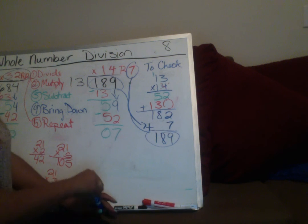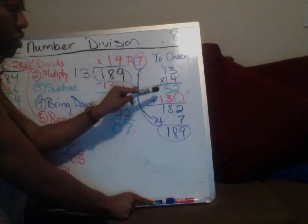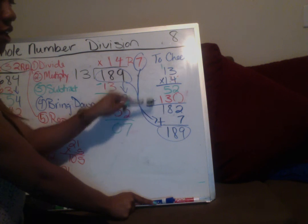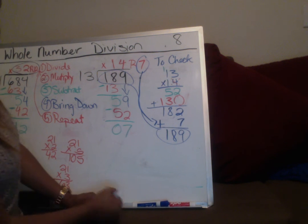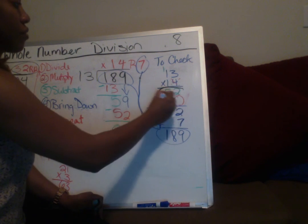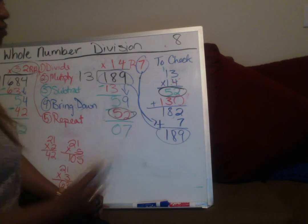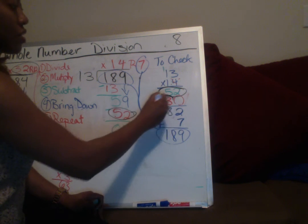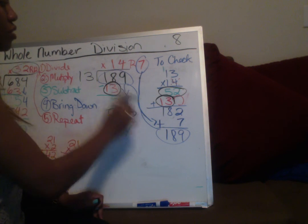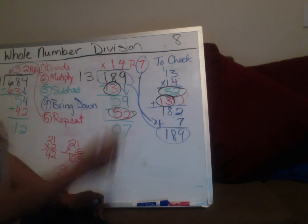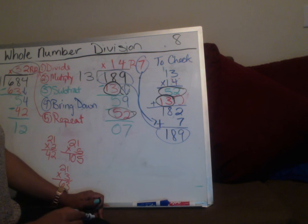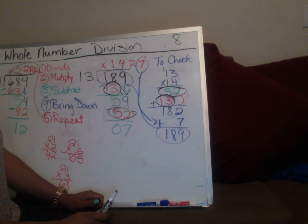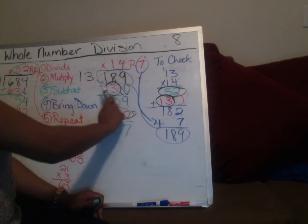Here's another connection: these are called partial products. You should find your partial products over in the division work. Here is 52 in both places. Here is 13 in both places. Remember, this is a placeholder 0 — we could also put a placeholder 0 in the division work because we brought down that 9. See how that works? They are cousins!